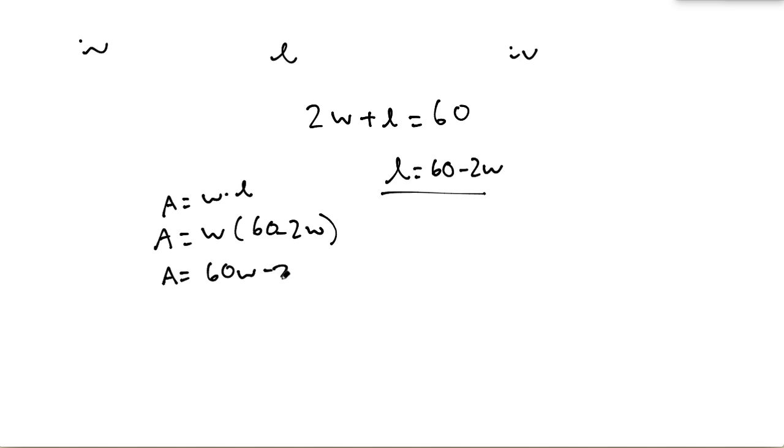minus 2w squared. And so if you take the derivative of the area, you would get negative 4w plus 60. And you know that the derivative of an area is 0, so 0 is equal to negative 4w plus 60. And then you simplify that: 4w is equal to 60, w is equal to 15. So now you know the width.